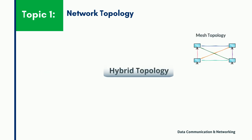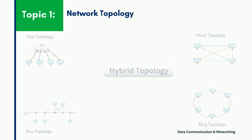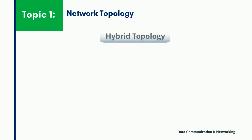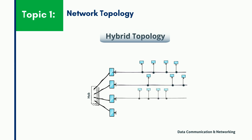Finally, the hybrid topology is a collection of two or more topologies which are scalable and can be expanded easily. For example, we can have a main star topology with each branch connecting several stations in a bus topology.